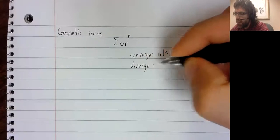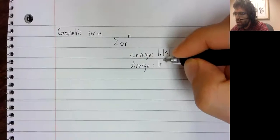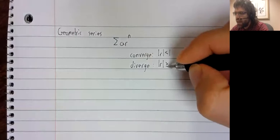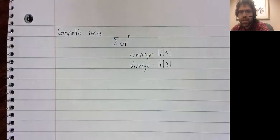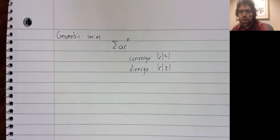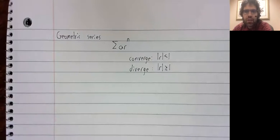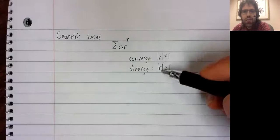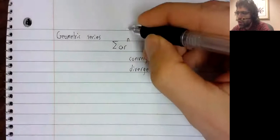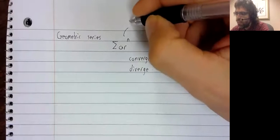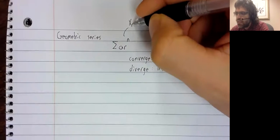And diverge if the absolute value of R is greater than or equal to 1. And the key observation that's going to get us to the ratio test is that you can think of R as a ratio of terms.